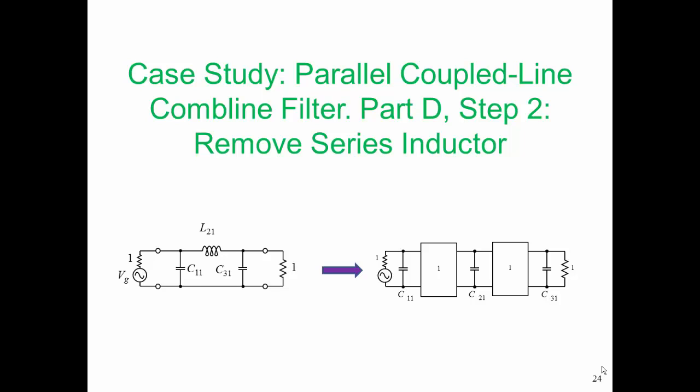In step two, we're going to remove the series inductor. At this point, we have that low pass filter prototype shown on the left there with two shunt capacitors and one series inductor, and we're going to get rid of that. We can get rid of that inductor by using capacitors and inverters, and I'm going to show you how.